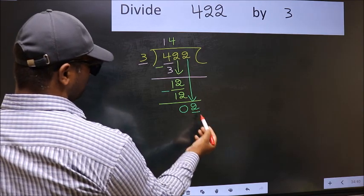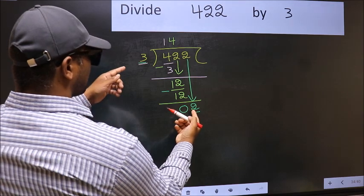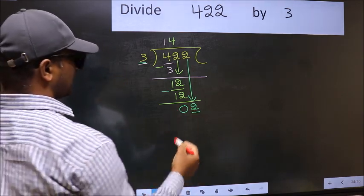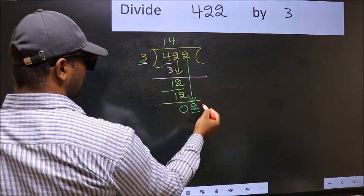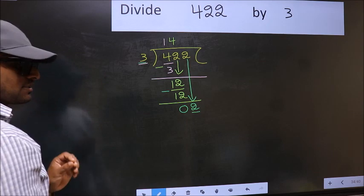Here we have 2 and here 3. 2 is smaller than 3. So what many do is they directly put a dot and take 0, which is wrong.